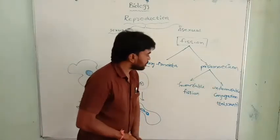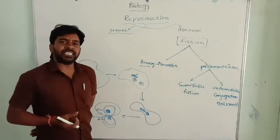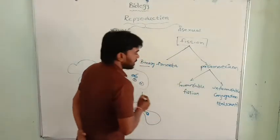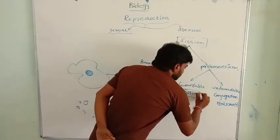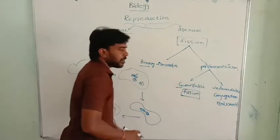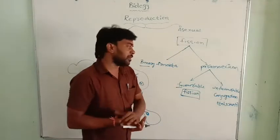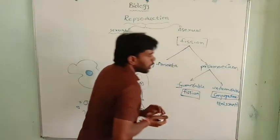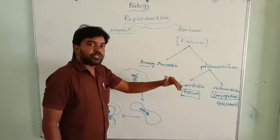In paramecium, reproduction depends upon the temperature conditions and the favorable conditions. Here in the favorable conditions, the paramecium by fission in the same way. By fission, in favorable conditions, the paramecium becomes two babies.